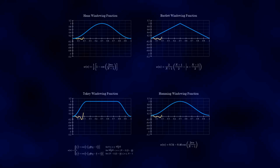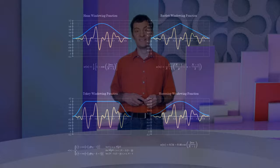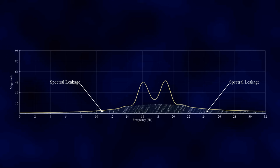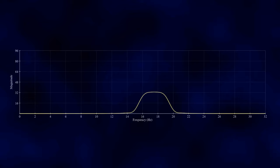Windowing functions fade a signal in from zero at the beginning of the window and fade them out again at the end. This ensures that there are no sharp edges at the beginning and end of the signal, and it reduces — but doesn't solve — the problem of spectral leakage. Unfortunately, no windowing function can perfectly achieve both minimising spectral leakage and maintaining high frequency resolution. Reducing spectral leakage often comes at the cost of broadening the main frequency peaks, which reduces our ability to distinguish between closely spaced frequencies. Therefore, choosing the right windowing function depends on your specific needs and priorities.